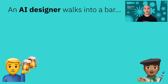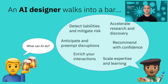Next, we have an AI designer walk into the bar, and the bartender asks the same question: what can AI do? But the designer uses much different language when answering this question. He says things like detect liabilities and mitigate risk, recommend with confidence, and enrich interactions.